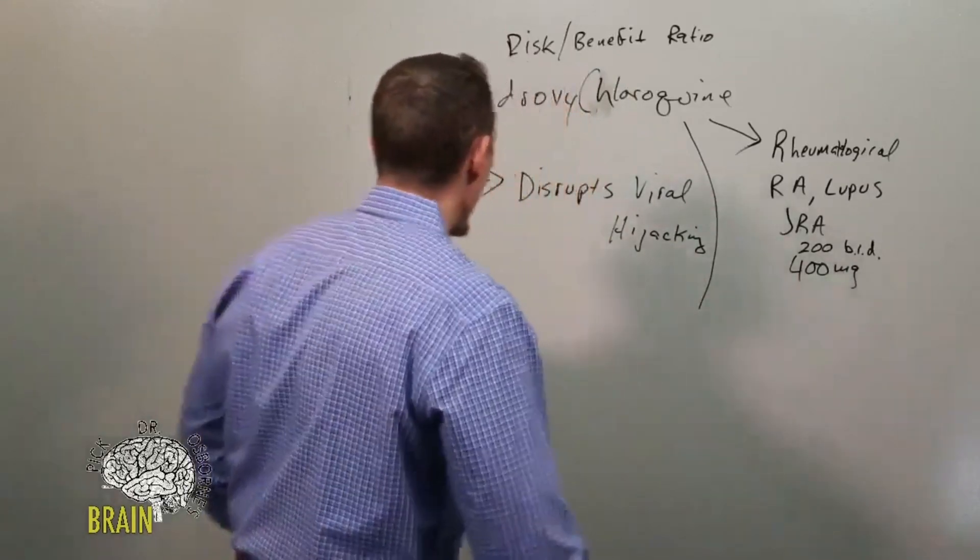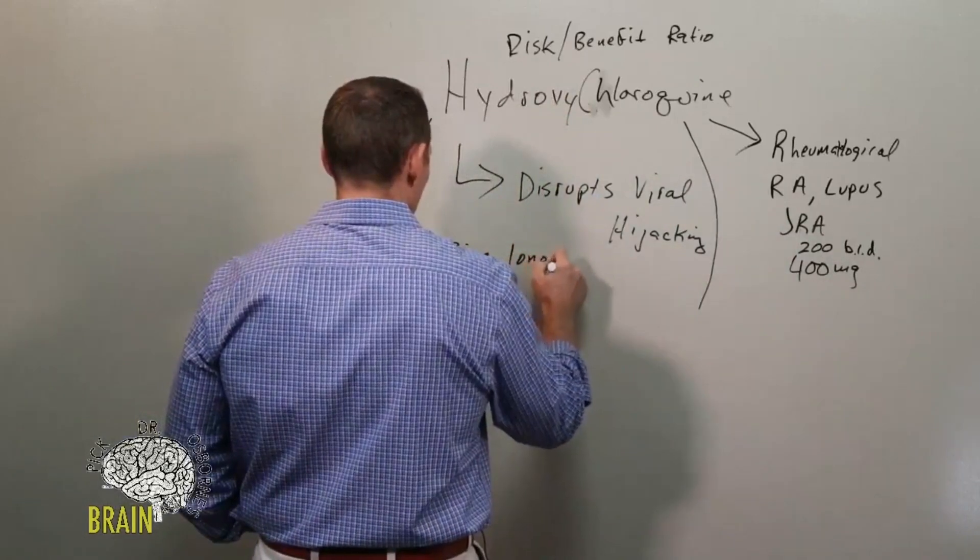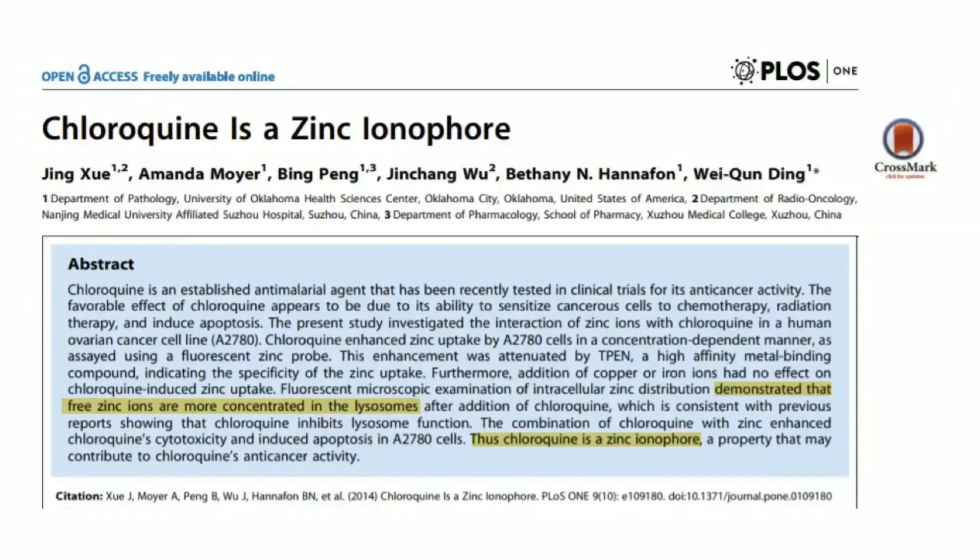it is known as a zinc ionophore. Now what is a zinc ionophore? A zinc ionophore means that this drug binds to zinc. We'll just use HCQ as our example. It binds to that zinc and it pushes it into the cell, and then once it pushes it into the cell, it can push it into the cellular machinery, the golgi apparatus, other places in the cell like mitochondria. It can push that